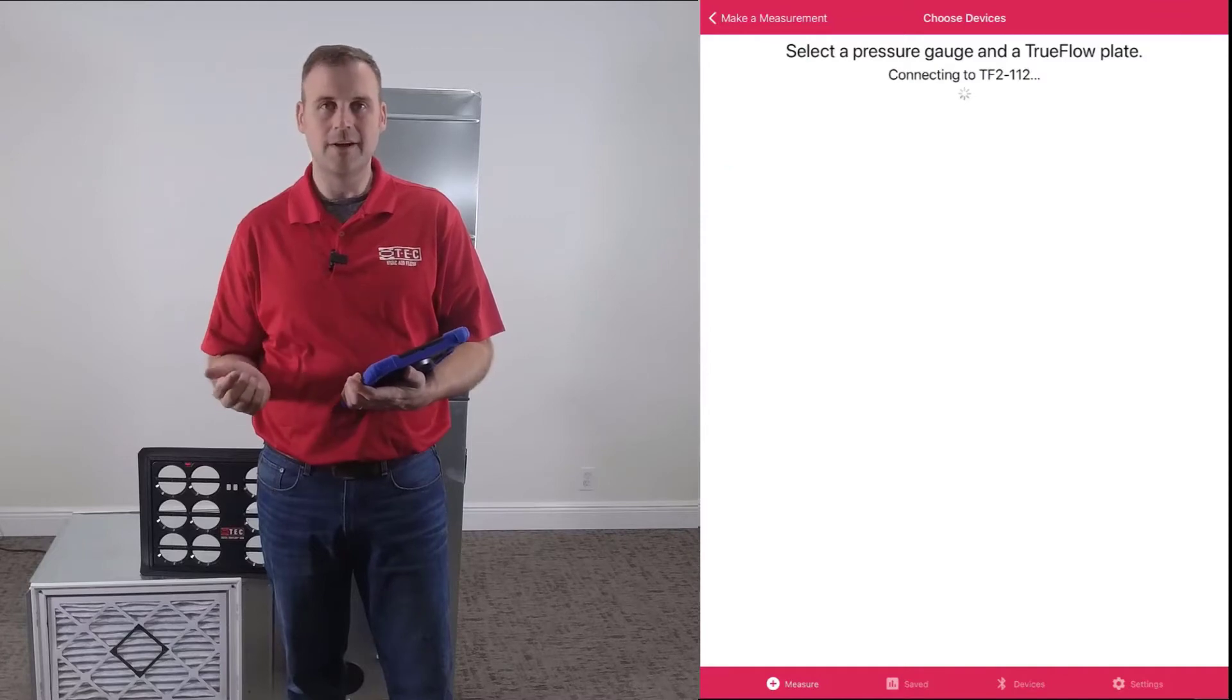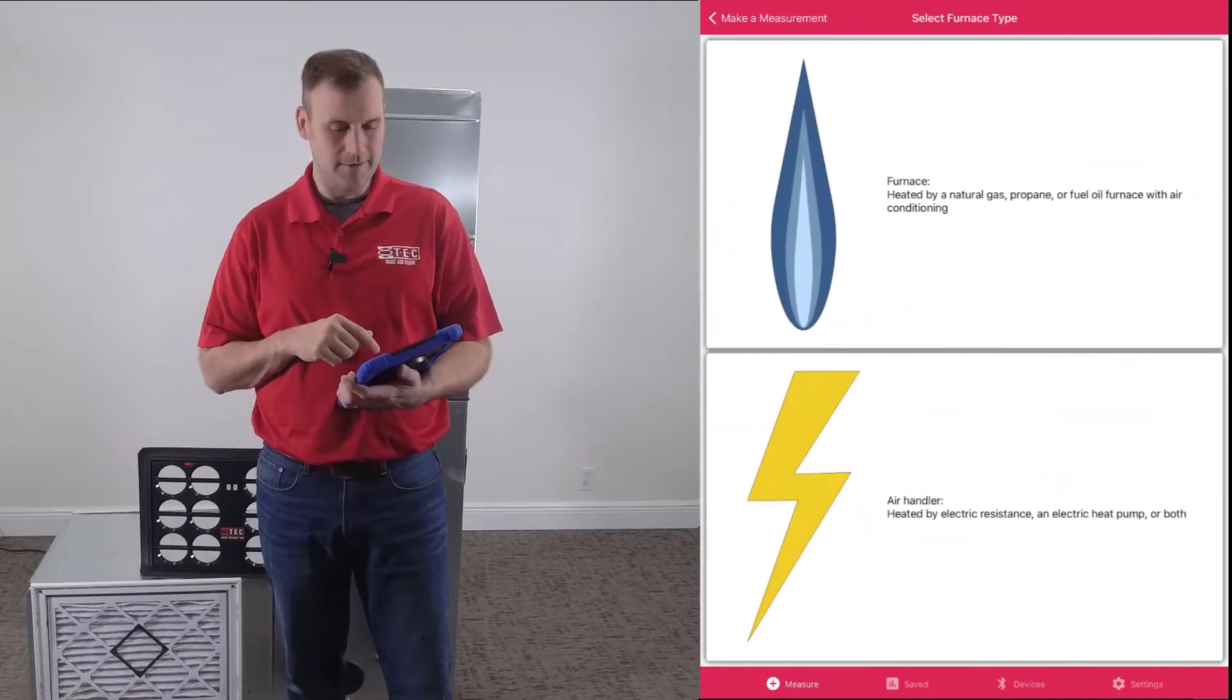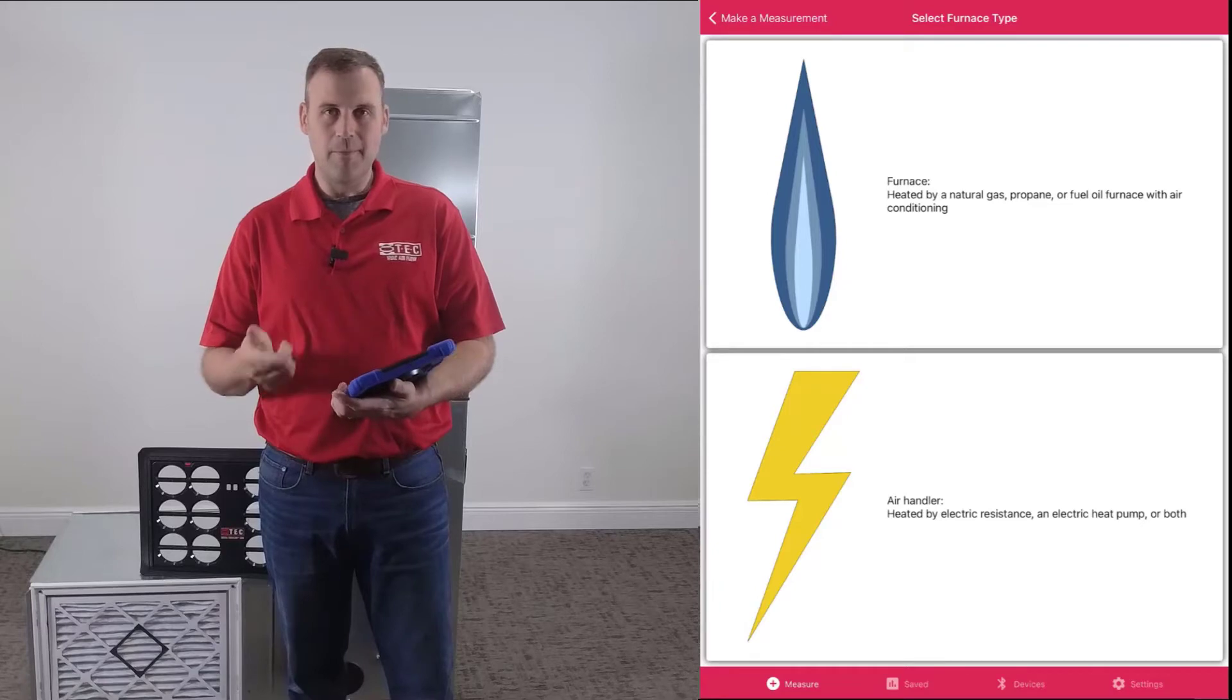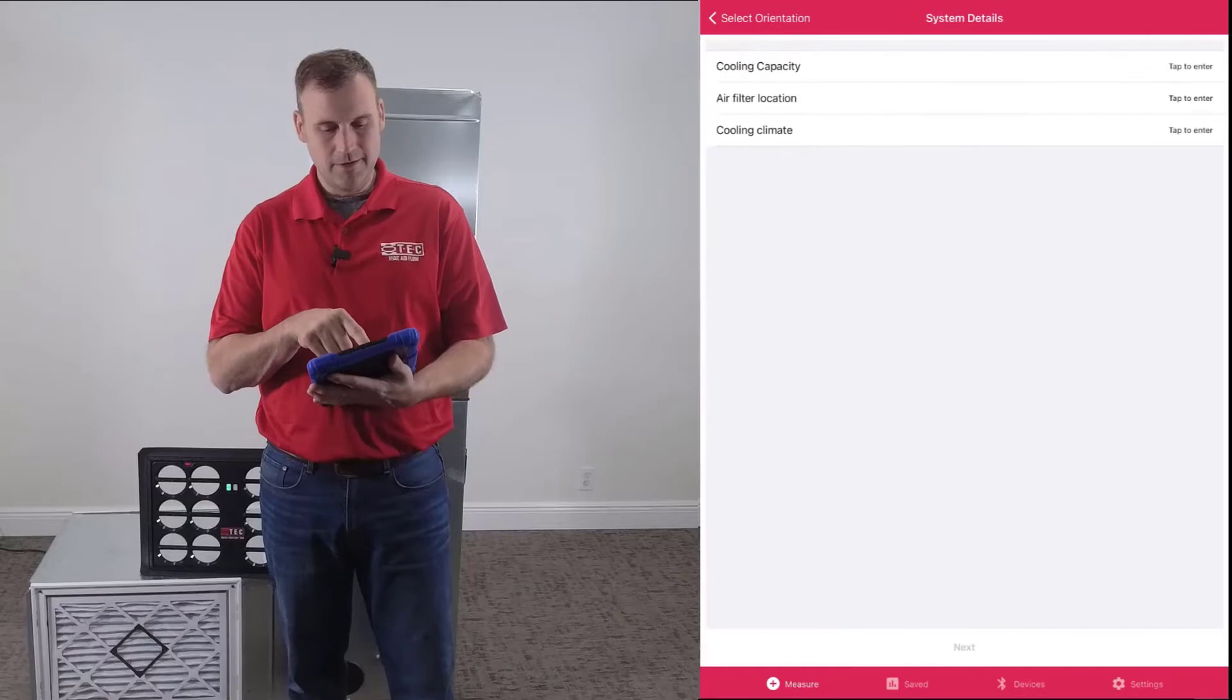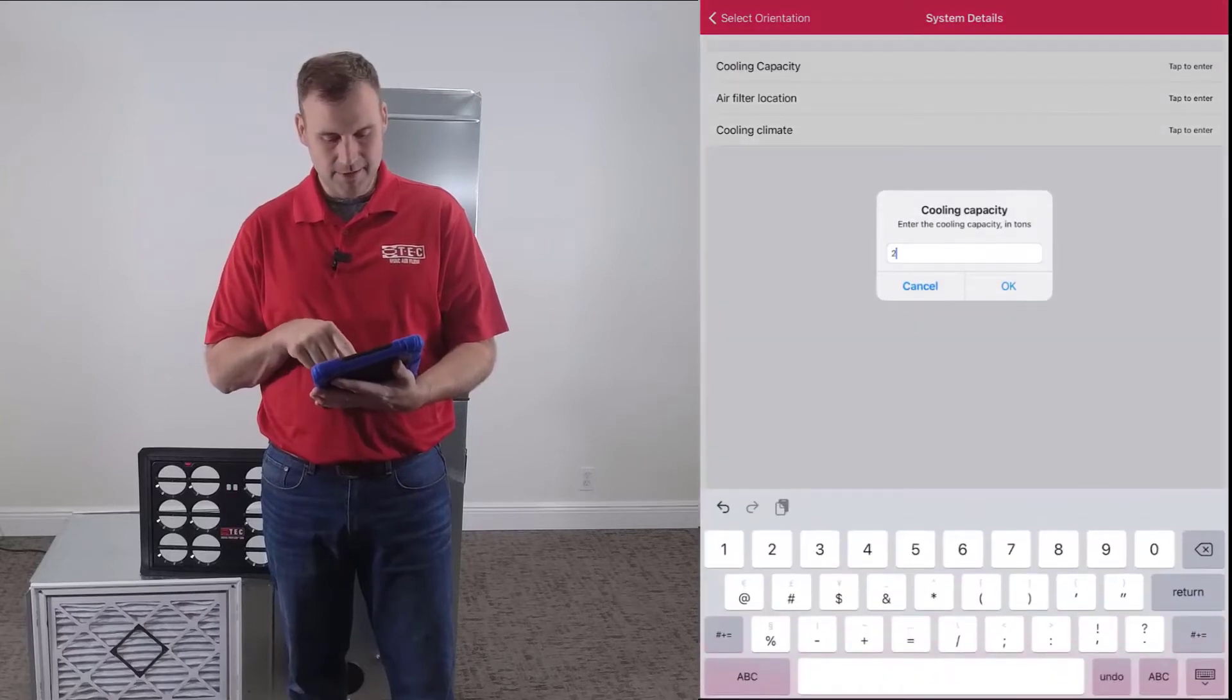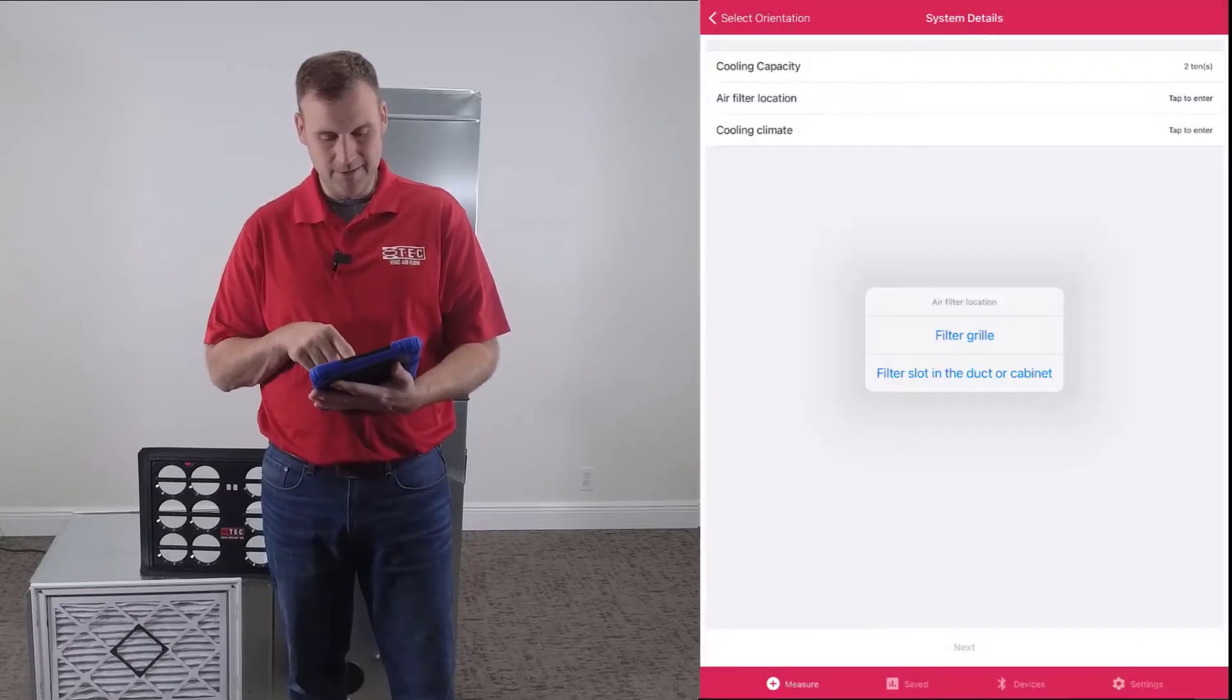Our app prompts us to the next step. We have an air handler, upflow, cooling capacity is a two-ton unit, air filter location is in the filter grill, cooling climate is 350 CFM per ton. Click next.